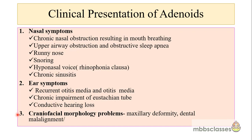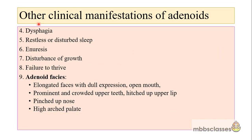Another clinical presentation of adenoid is changes in craniofacial morphology. Children with significant obstruction may have maxillary deformity and dental malalignment. Since adenoid is associated with nasal obstruction, it can interfere with swallowing, causing dysphagia. Because of disturbed sleep, snoring, and airway obstruction, the child will have disturbed sleep. These children may have enuresis, and if symptoms persist and are not corrected, it can lead to disturbance of growth and in very few cases failure to thrive.